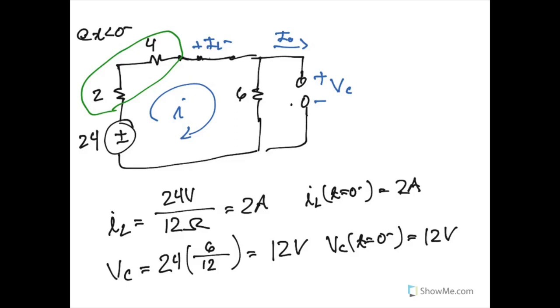And so this will be the voltage across our capacitor at the instant right before zero. And again, these voltages and currents will not go away, and we will have to replace them in our circuit when we look immediately at time after zero to see what happens.